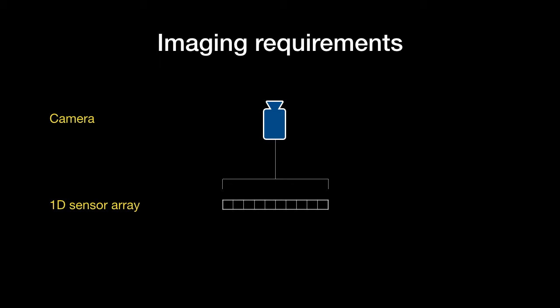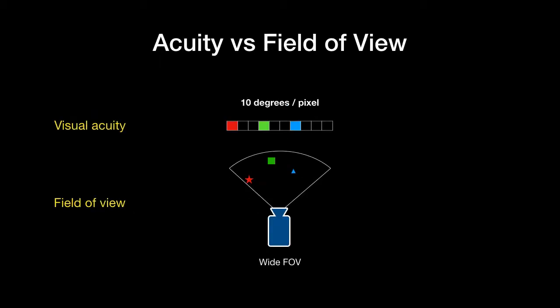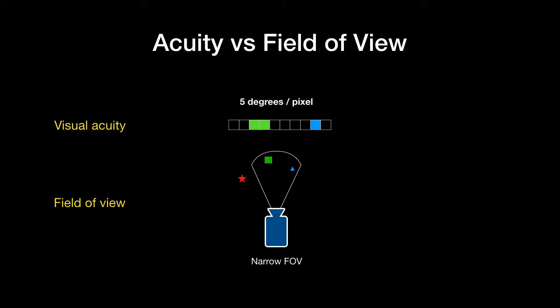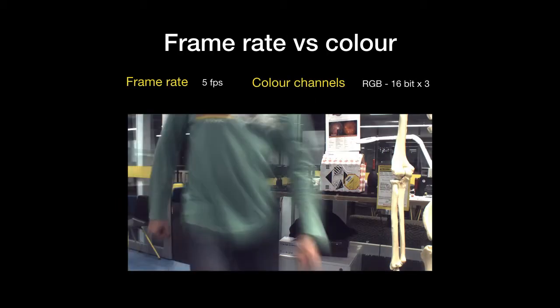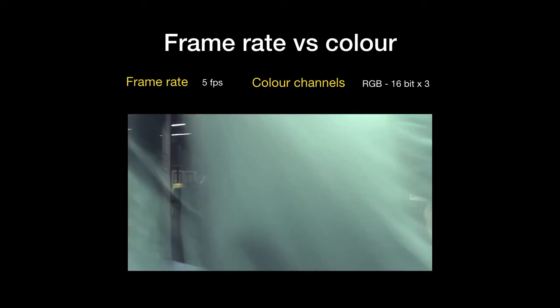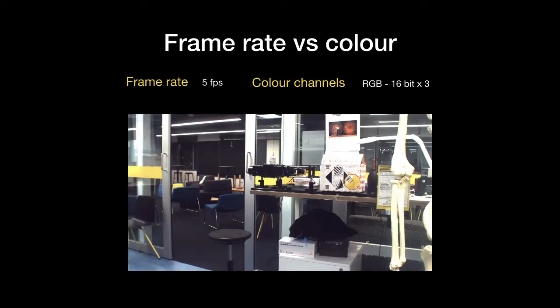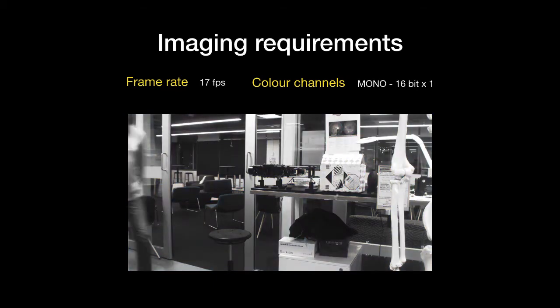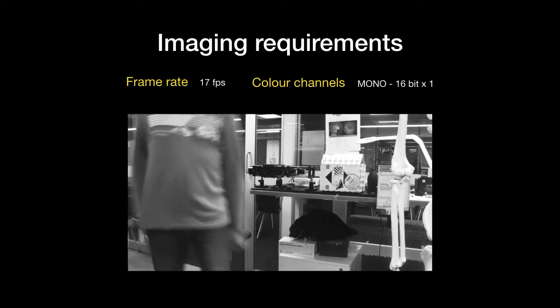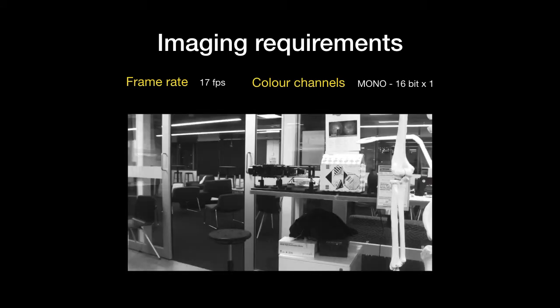Consider a sensor with only 10 pixels. We can spread these over a wide field of view, or they can provide greater detail over a smaller field, but we may miss something. Mobile robots exist in a dynamic environment. If the frame rate is low, motion is blurred. An increased frame rate reduces this and makes object detection and tracking possible.